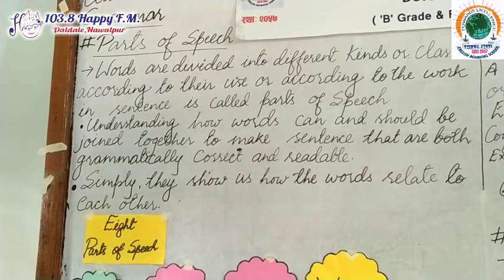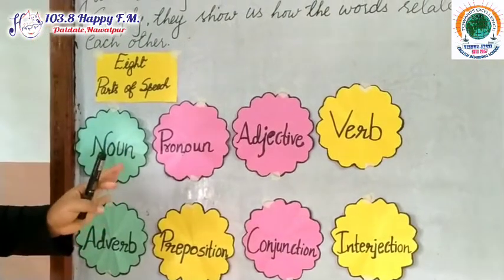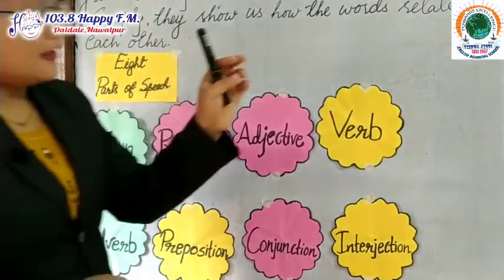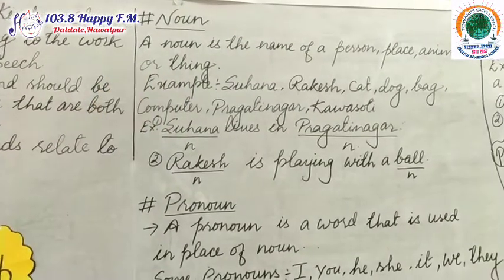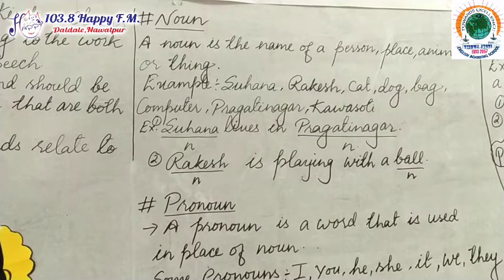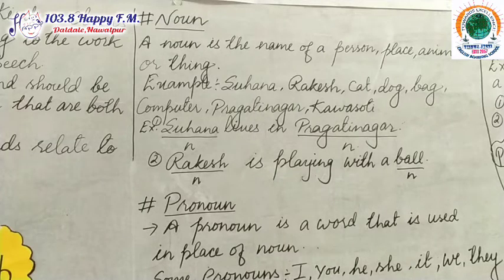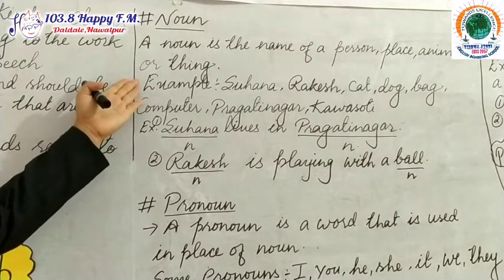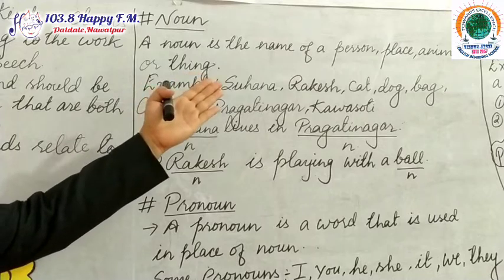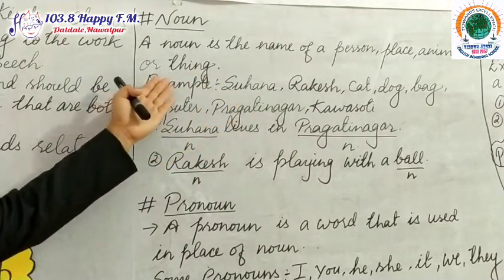After knowing the parts of speech, let's go and define each part of speech in detail so you can understand. The first part of speech is noun. What is a noun, dear students? We know that everything around us has its name. I have my name and you have also your name. A noun is the name of a person, animal, place, or thing. Simply, we can say that a noun is the naming word. A noun is the name of a person, place, animal, or thing.